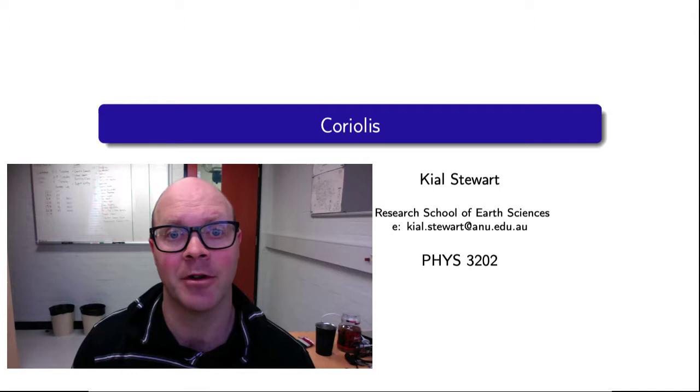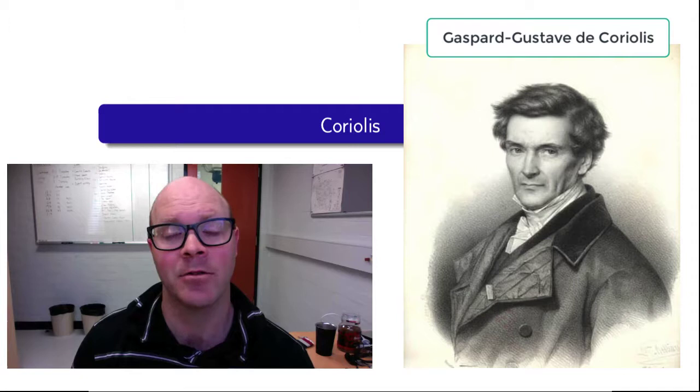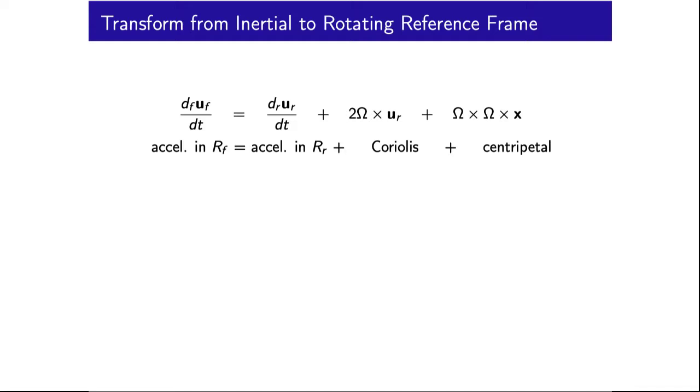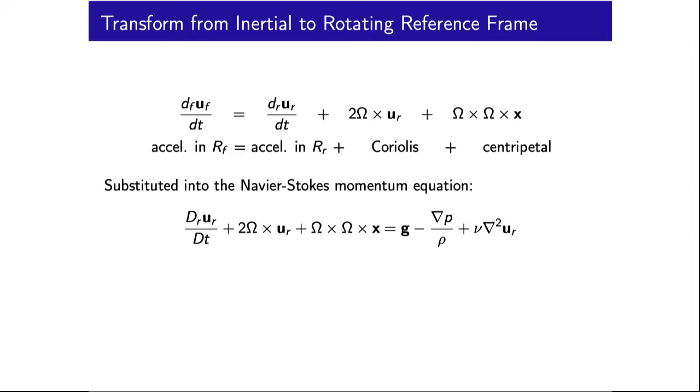This unit examines the Coriolis term that was introduced during our transform from inertial to rotating frames of reference. The Coriolis term is named for Gaspard-Gustave de Coriolis, a 19th century French scientist who was interested in the transformation of energy between inertial and rotating systems. Following on from before, the rate of change of a velocity vector in an inertial frame of reference is equal to the rate of change of that velocity vector in a rotating frame of reference plus the Coriolis and centripetal terms.